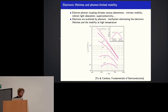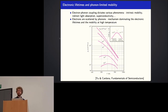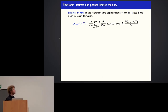As you may know, the electron-phonon coupling plays an important role in various phenomena like phonon-mediated superconductivity, indirect light absorption, or the intrinsic mobility, which is limited by the scattering of electrons by phonons in the material. This scattering mechanism is actually dominating at high temperature or when the impurity concentration is very low, as you can see here in the case of silicon.